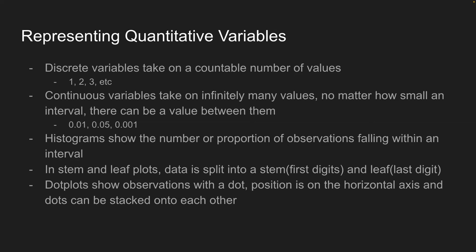A histogram shows the number or proportion of observations falling within an interval. Another way to represent data is through stem and leaf plots — the data is split into a stem, which is the first digit, and a leaf, which is the last digit. Dot plots are another option; they show observations with a dot on a number line, and two dots stacked on top of each other means two instances of that value.